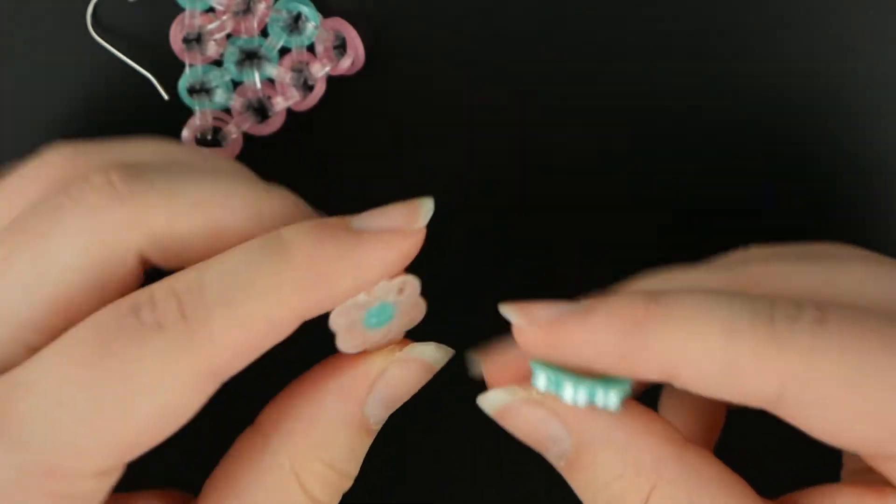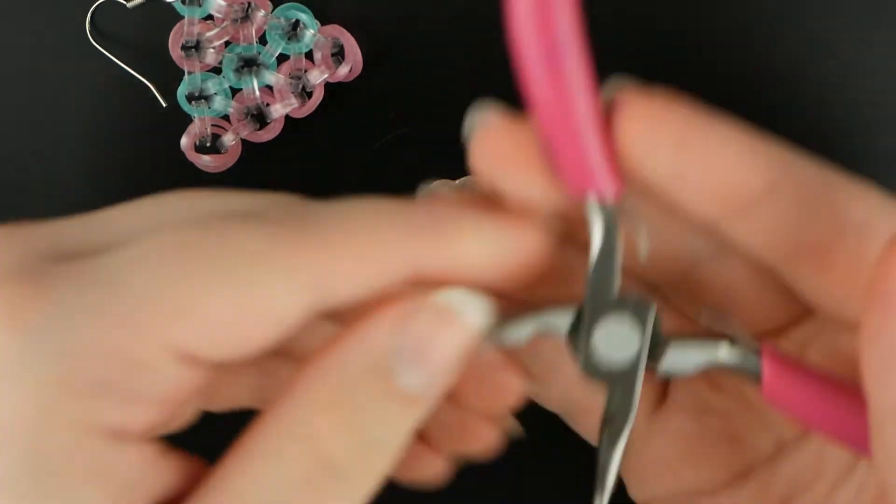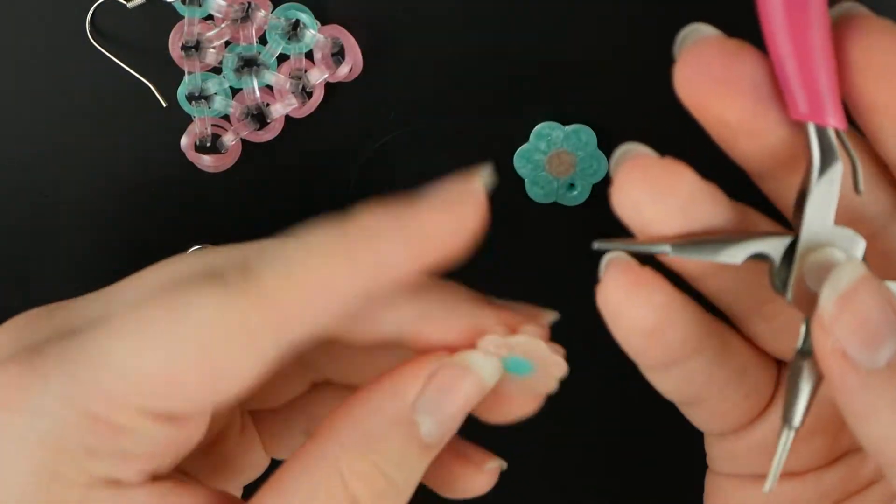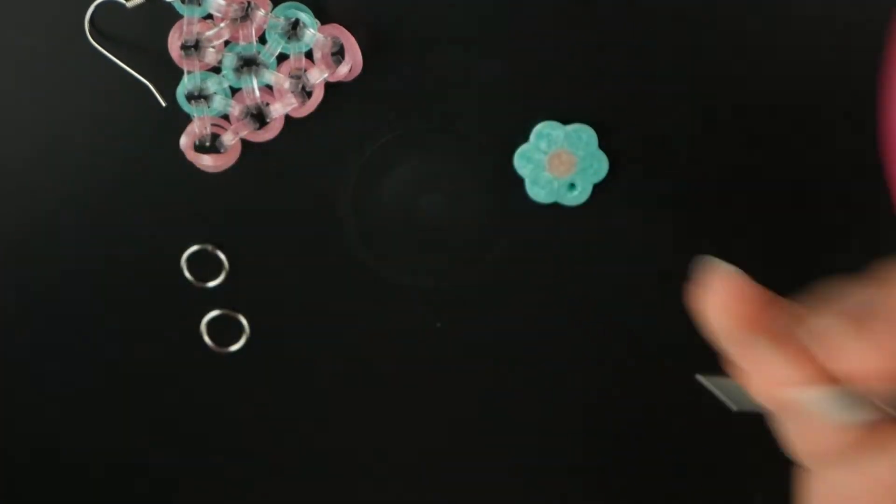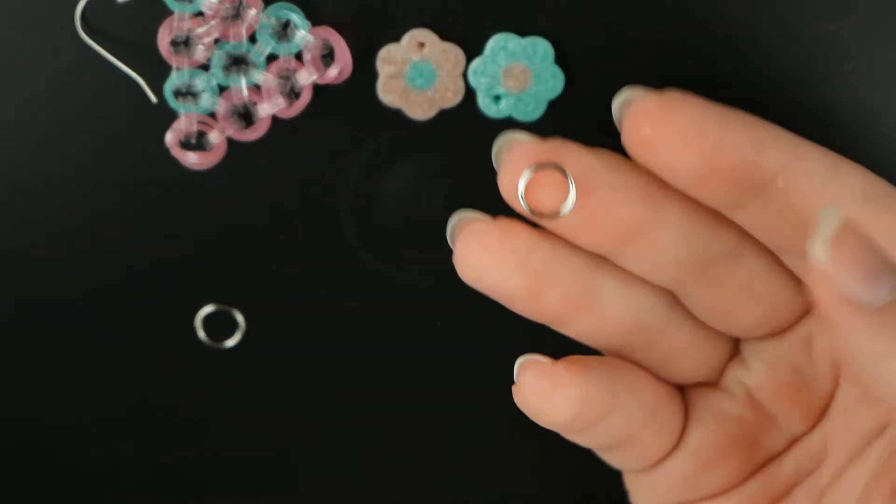I always like to iron mine so that the backs are completely flat with no holes left, because I just think it looks nicer and it's more sturdy. What I did is I took these pliers and I just poked a hole through the back of there, and then I put these through there as well just to make the hole bigger so it can fit these jump rings.